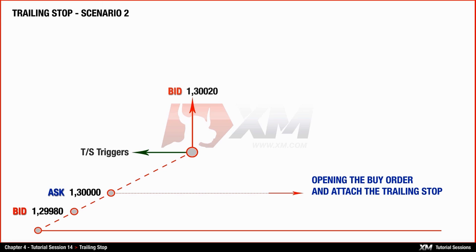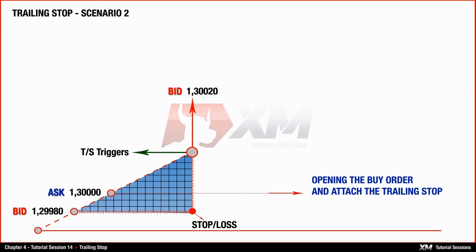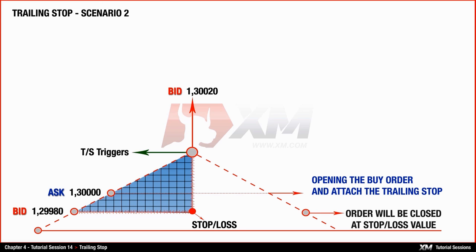The trailing stop has been set according to the closing price, in other words, the bid price of the buy order. As soon as the bid price reaches the level of 1.30020, the trailing stop is activated. This means that the trailing stop will lock your stop loss at the value of 1.29980. If at this point the market starts moving against your potential profit and reaches the value of 1.29980, your position gets automatically closed at a loss of 20 points, equal to 2 pips, as you opened it at a price of 1.30000.